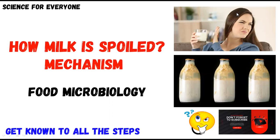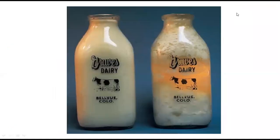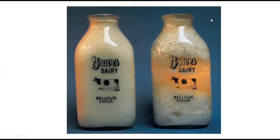In today's video I will discuss each and every step of milk spoilage — how the spoilage starts, how it ends, and why the texture of the milk changes from the real one. This simple image shows milk that is not yet spoiled — it is clear and usable — but after some time it becomes like this. So the question is: what happened inside this milk?